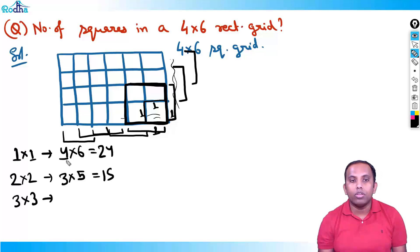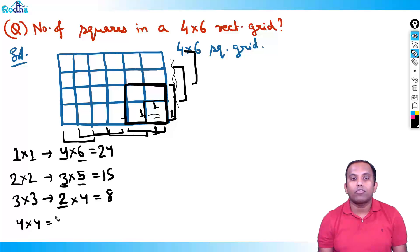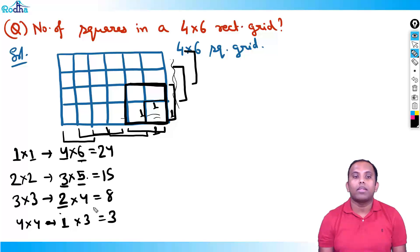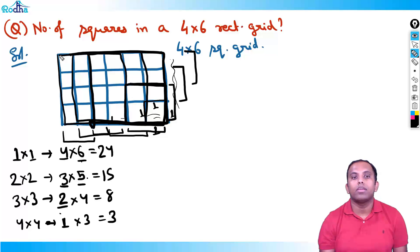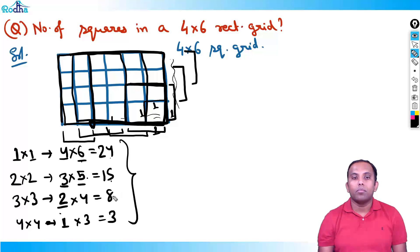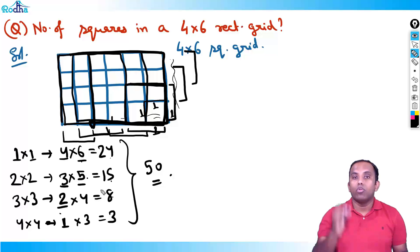For 3×3 squares: rows decrease by 1 again to 2, columns to 4. So 2×4 = 8 squares of size 3×3. For 4×4 squares: 1 row position, 3 column positions, so 1×3 = 3 squares of size 4×4. The total is 24 + 15 + 8 + 3 = 50 squares in the 4×6 rectangular grid.